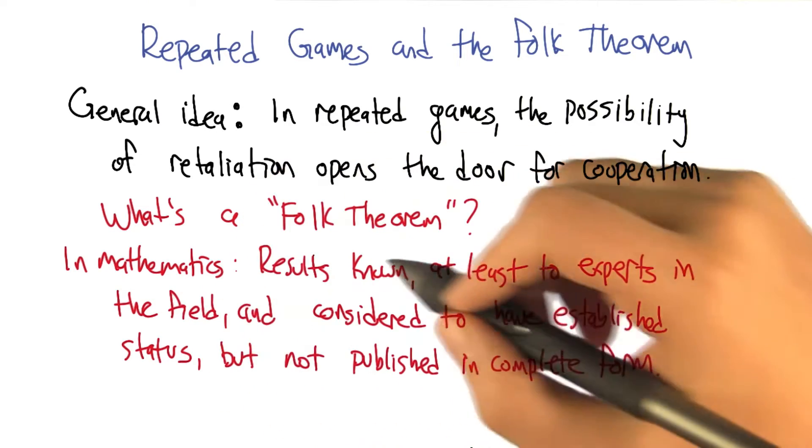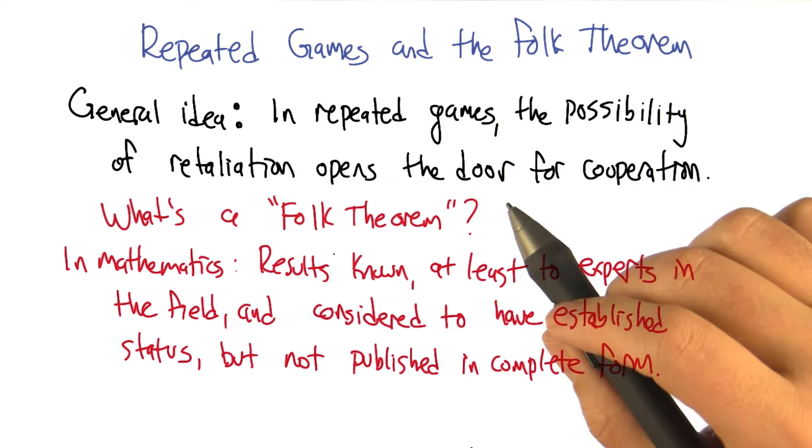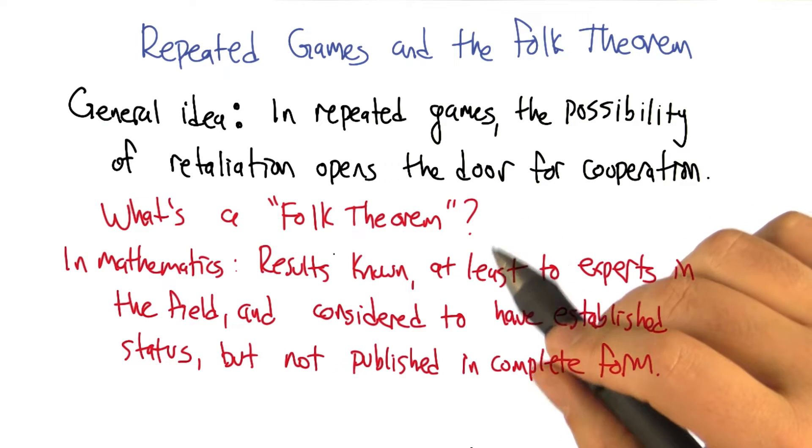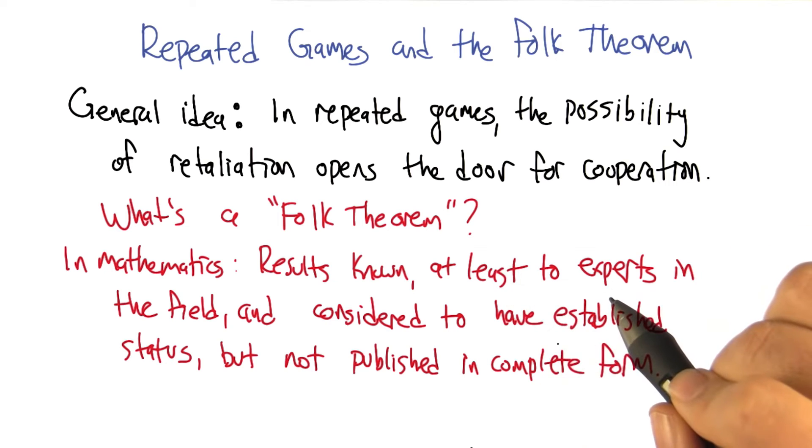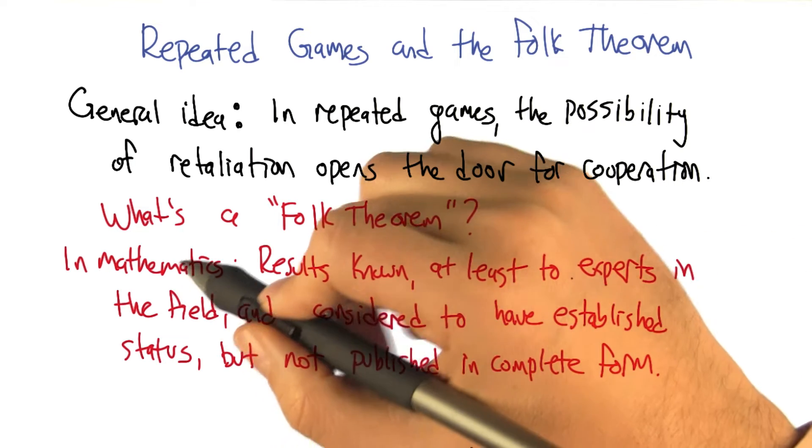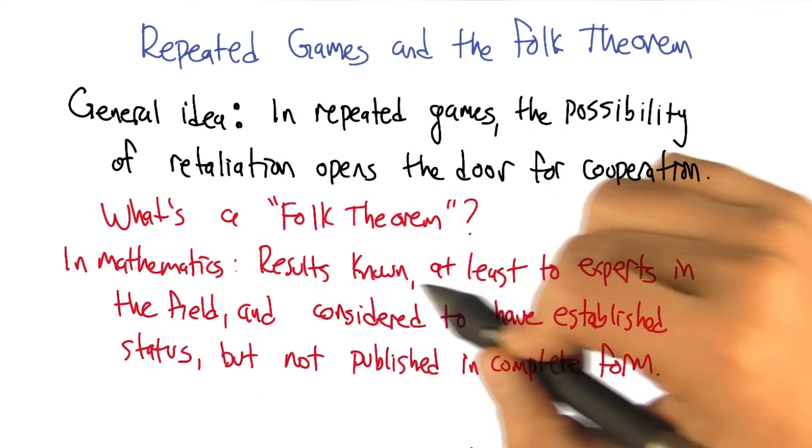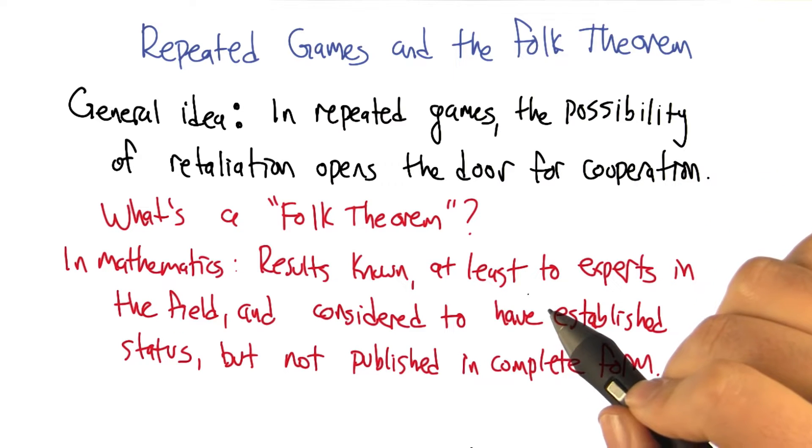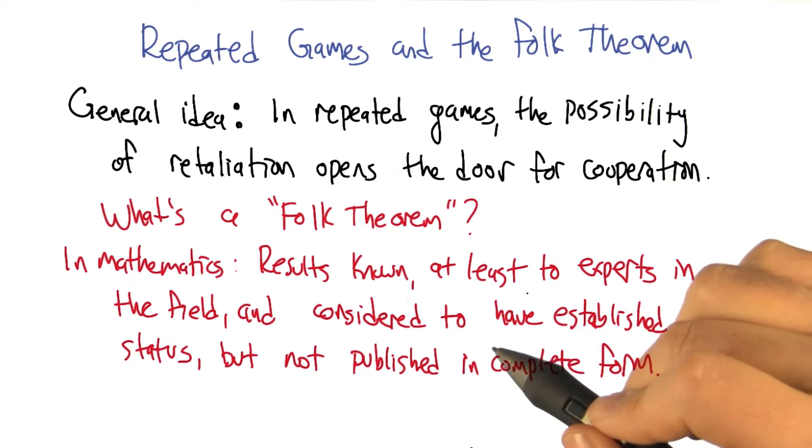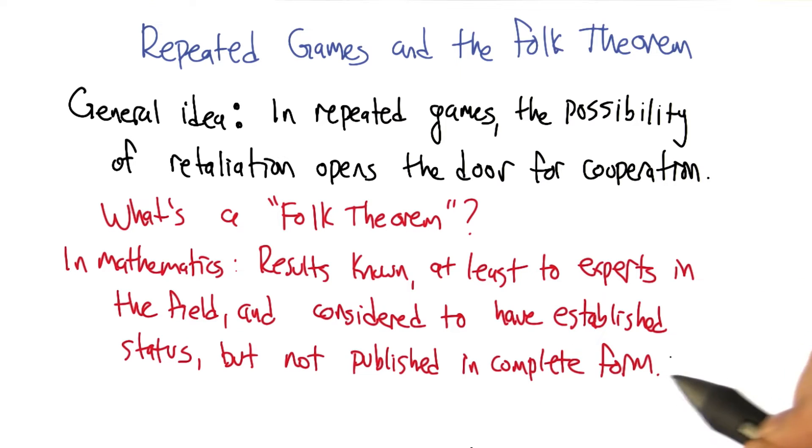In general in mathematics, a folk theorem is two words. So in mathematics, folk theorems are results that are known, at least to experts in the field, and they're considered to have established status, but they're not really published in their complete form.